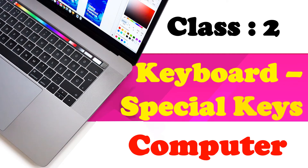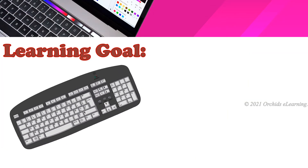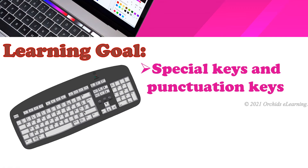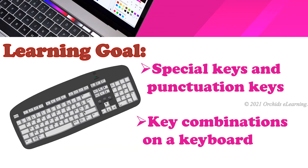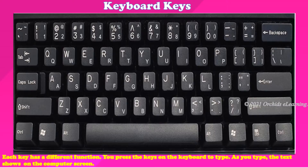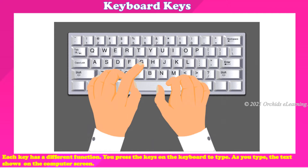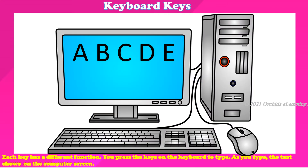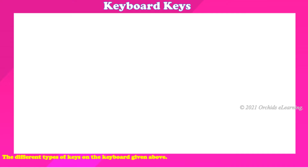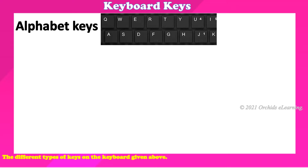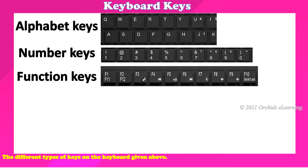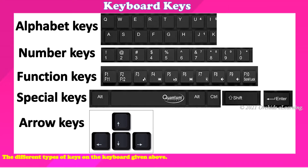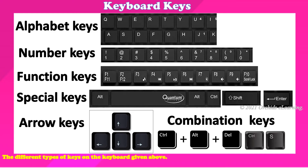Keyboard special keys, Class 2. By the end of this lesson you will understand special keys, punctuation keys, and key combinations on a keyboard. Each key on a keyboard has a different function. You press the keys on the keyboard to type, and as you type the text shows on the computer screen. The different types of keys on the keyboard are: alphabet keys, number keys, function keys, special keys, arrow keys, punctuation keys, and combination keys.